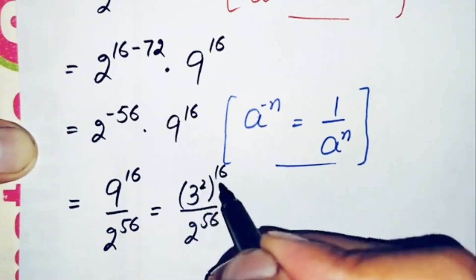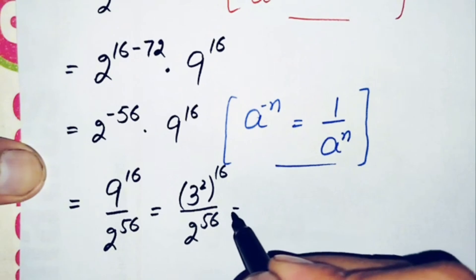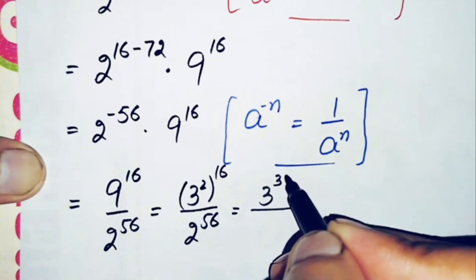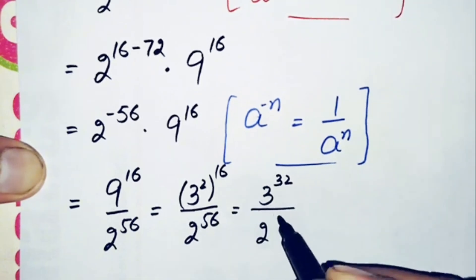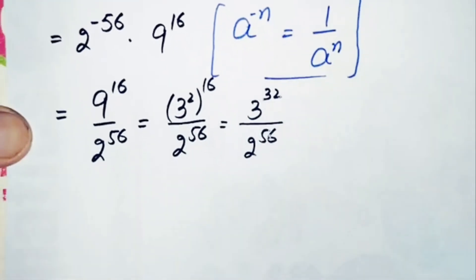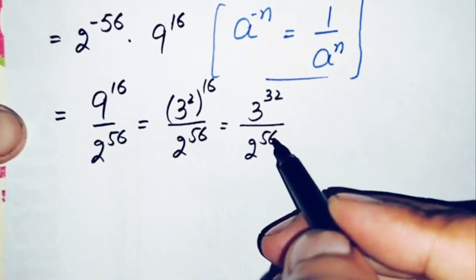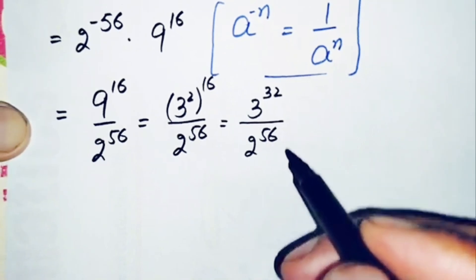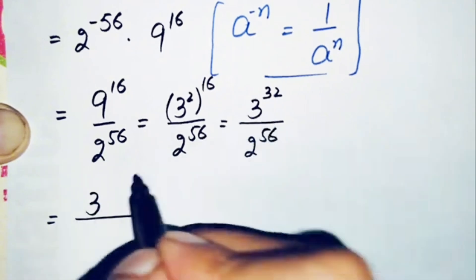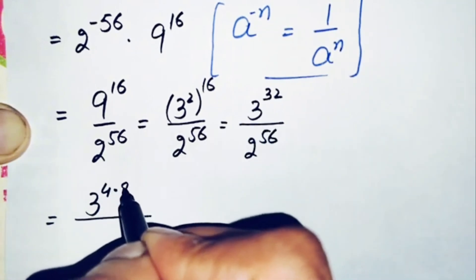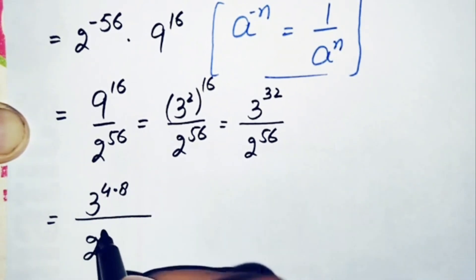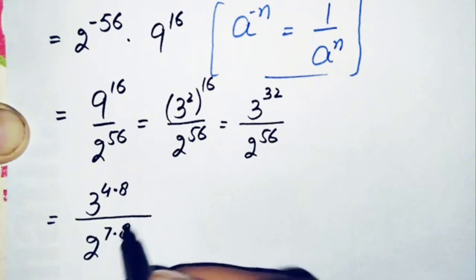We multiply the two powers 2 and 16, giving 3 raised to power 32, divided by 2 raised to power 56. Next, we factorize these two exponents as products of two numbers sharing a common factor. We can write 32 as 4 times 8, and 56 as 7 times 8.